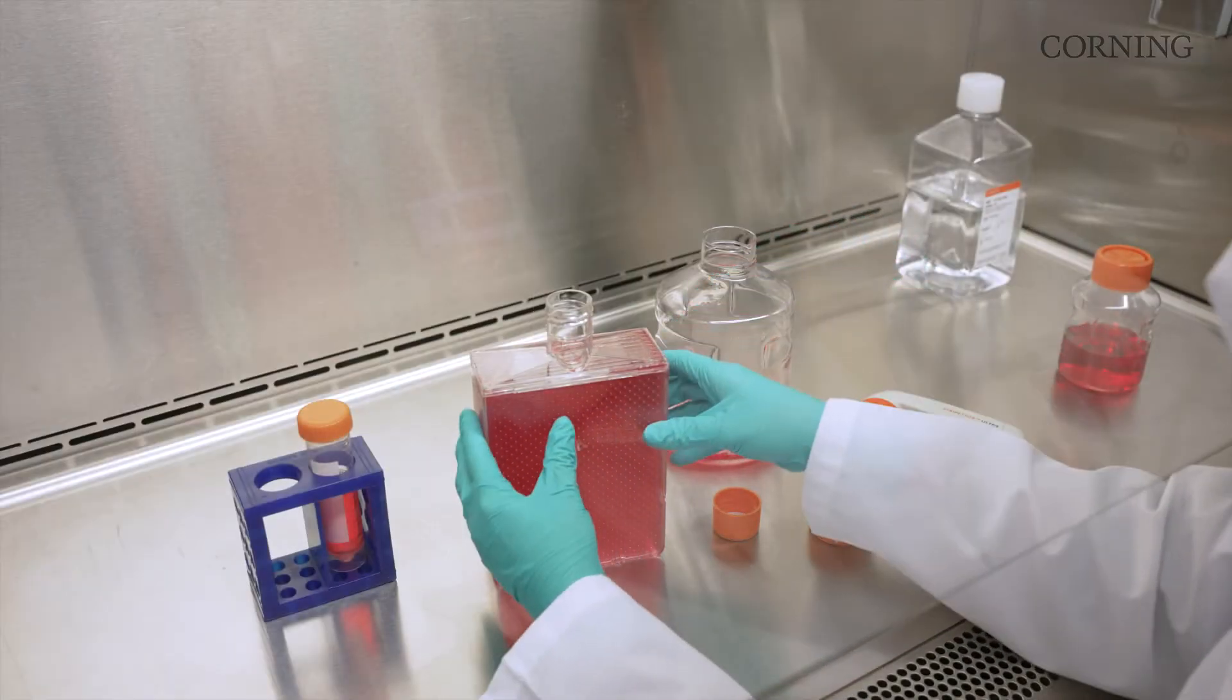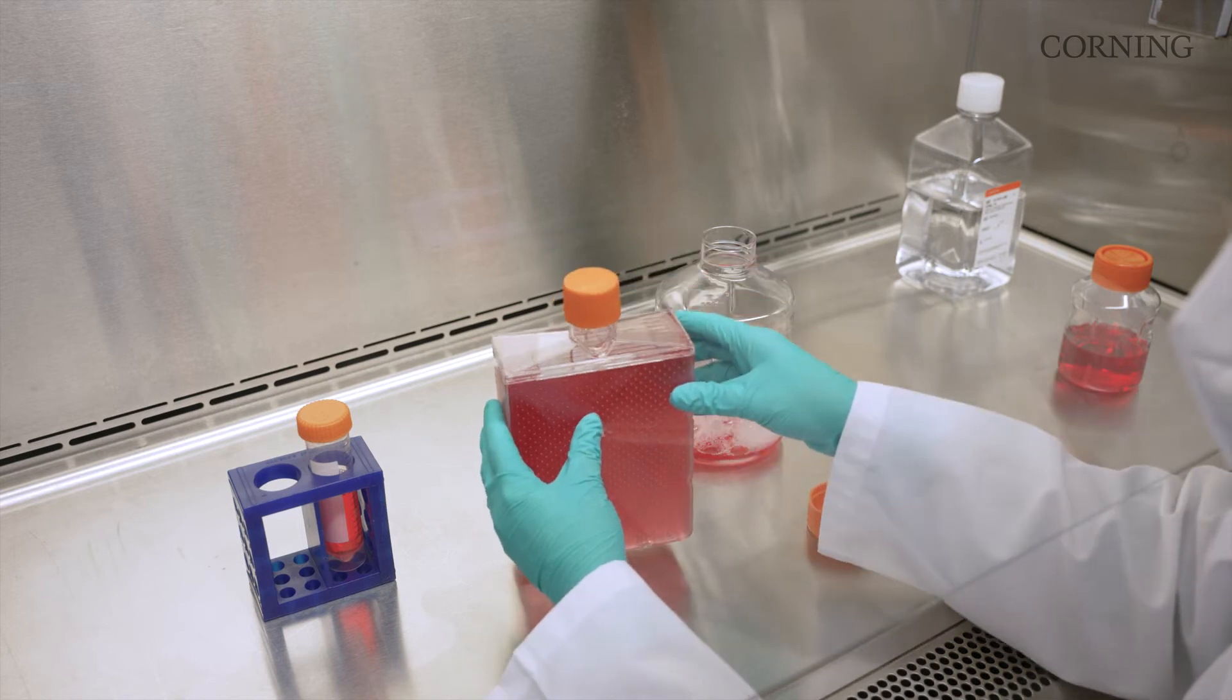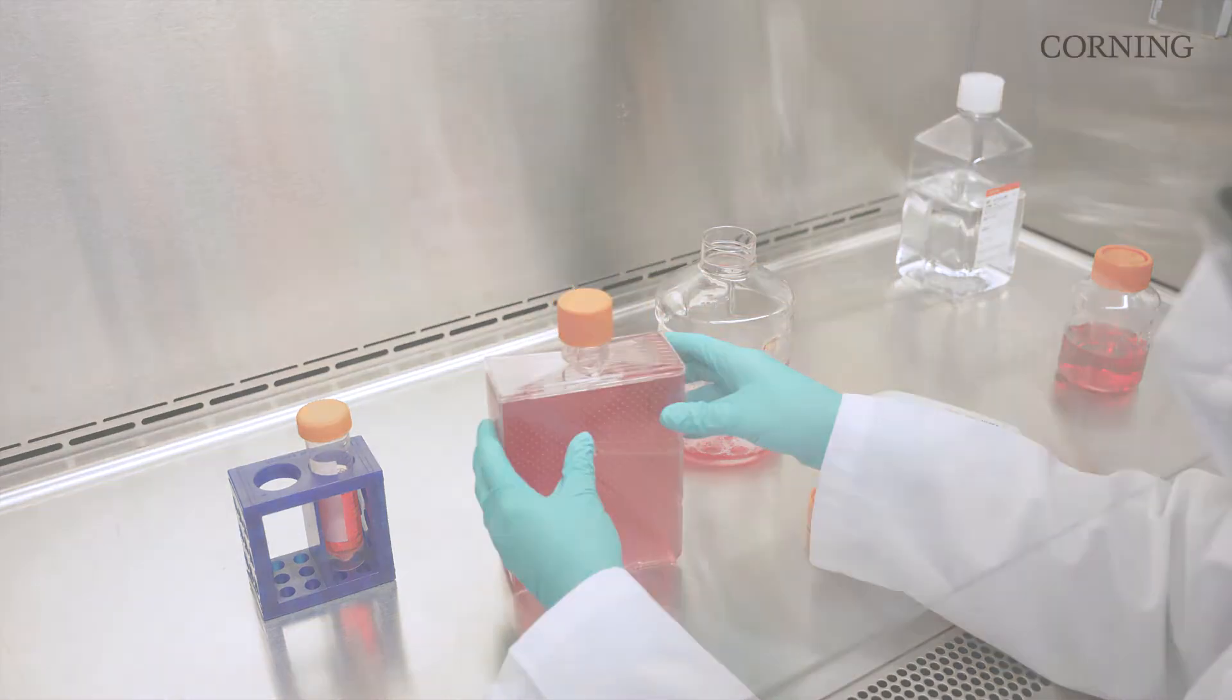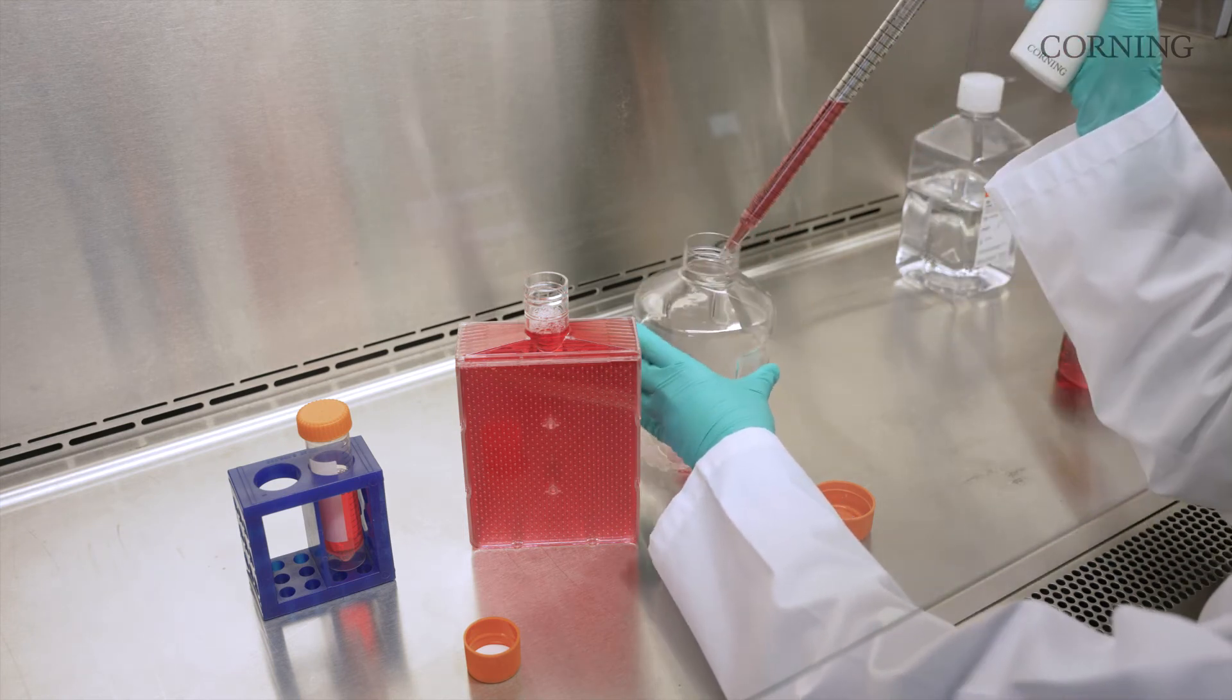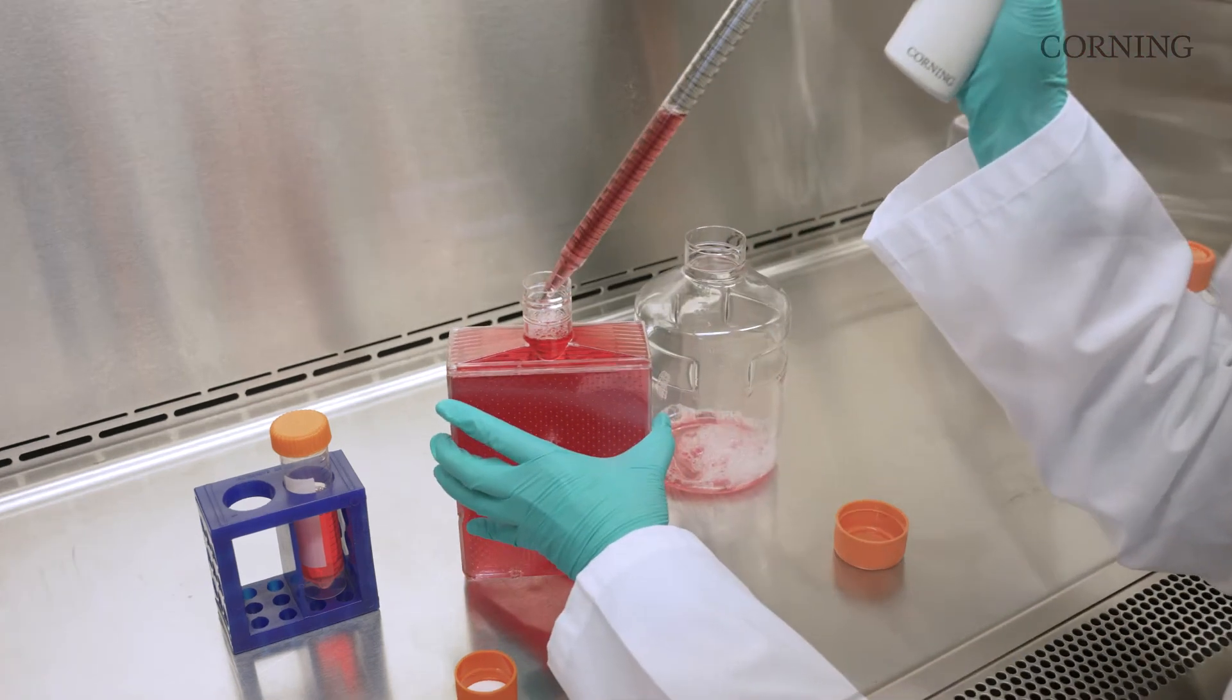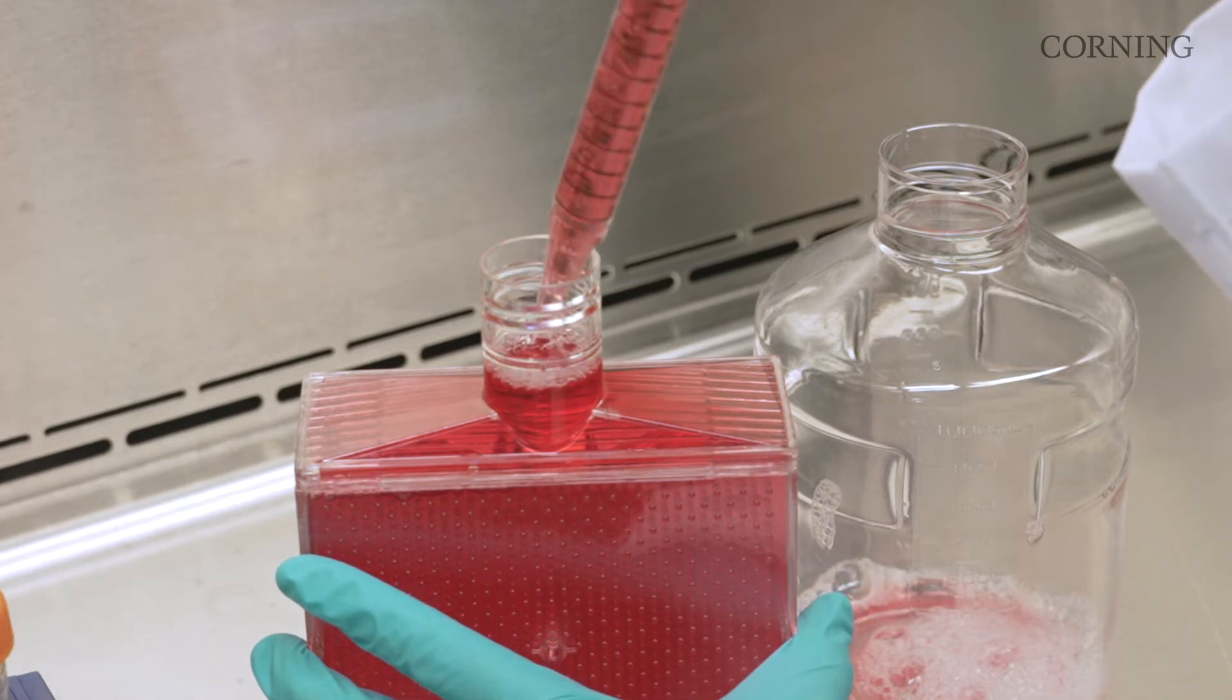Once the media level reaches the top of the flaskettes, loosely replace the cap, tilt the flask, and tap it against the surface to release any trapped bubbles. Complete filling the vessel by pouring or preferably pipetting. This way, if there are bubbles or foam in the neck, you can aspirate them out as you fill with the same pipette.